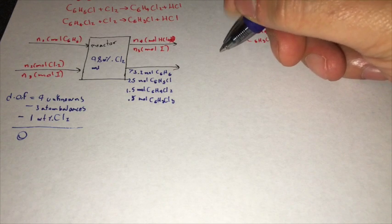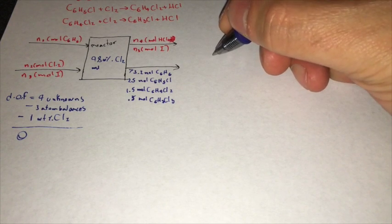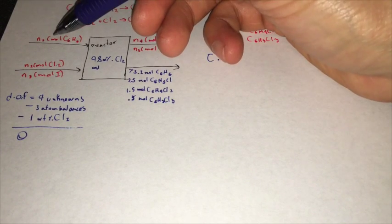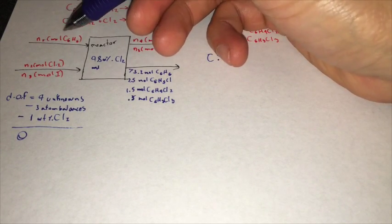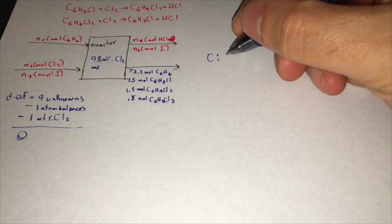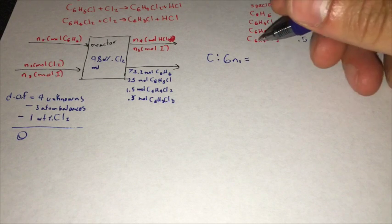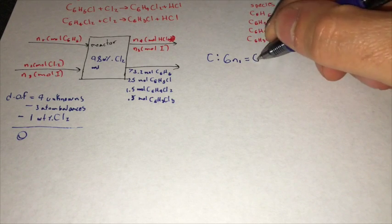Okay, so now we start writing our atomic balances. We're going to start with our C balance. C balance, we have N1 going in, and it has six carbons, so 6N1 is equal to six.